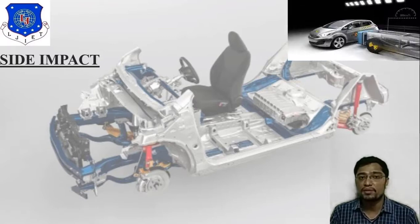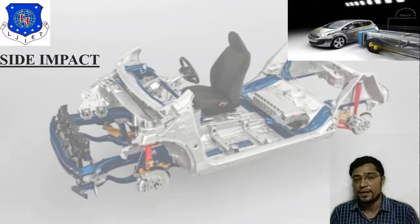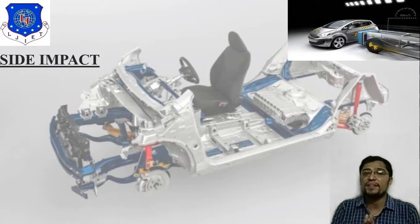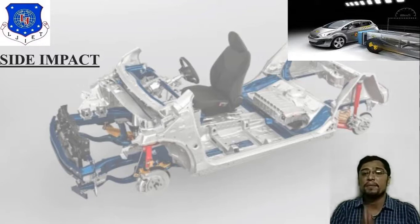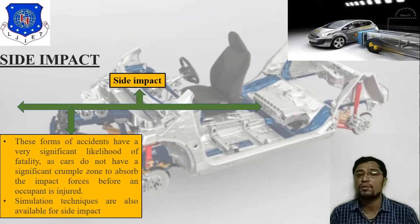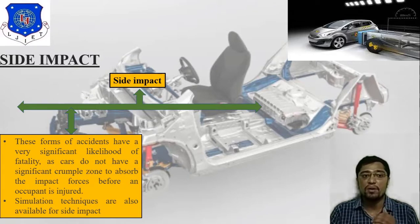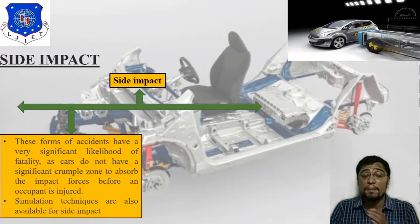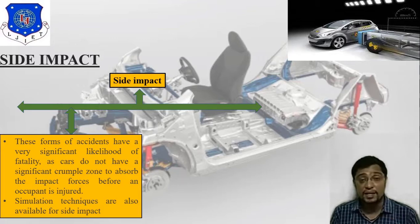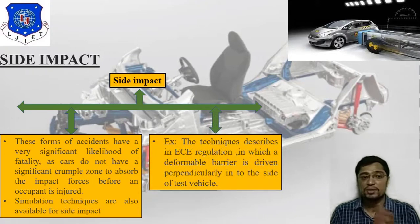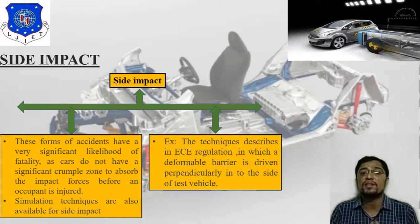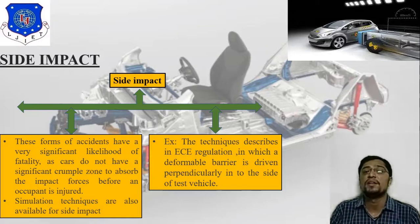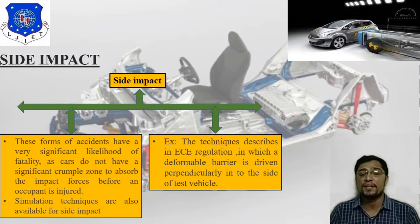Next is side impact. In the image you can find the side part. Side impact, or side collision, is done at the side faces of the vehicle. This form of accident has a very significant likelihood of fatality as cars do not have a significant crumple zone to absorb the impact forces before an occupant is injured. Simulation techniques are also available for side impact. As described in ECE regulation, a deformable barrier is driven perpendicularly into the side of the test vehicle.